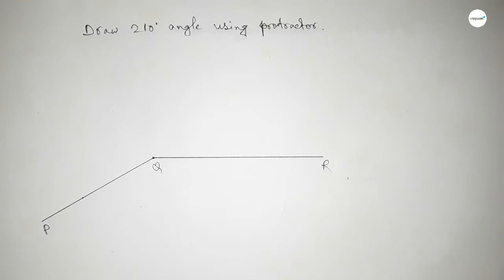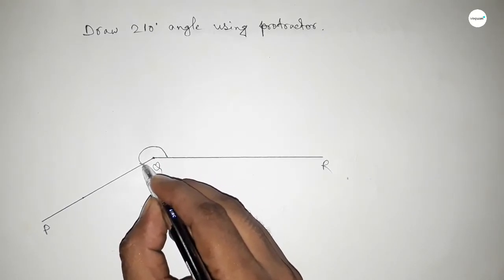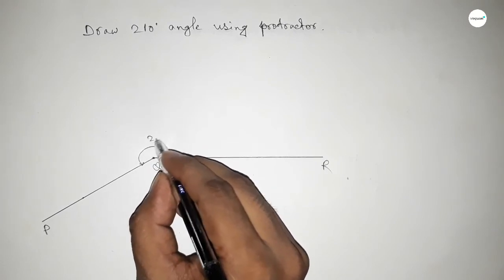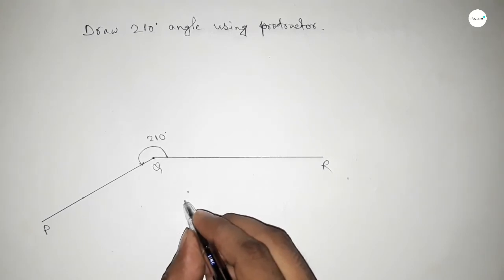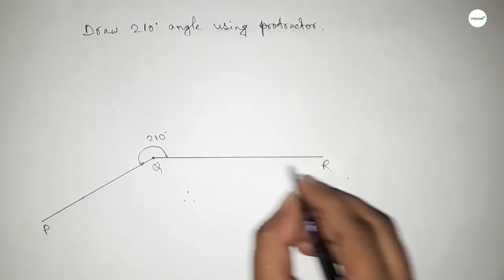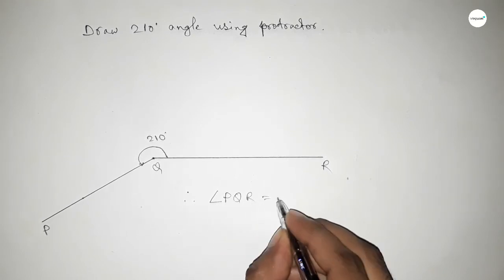This is P, Q, and R, and this angle is 210 degrees. So angle PQR equal to 210 degrees. Therefore, angle PQR equal to 210 degrees.